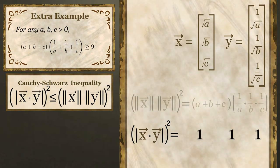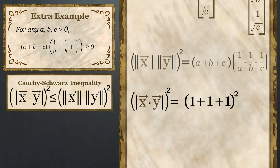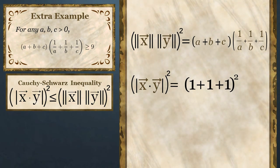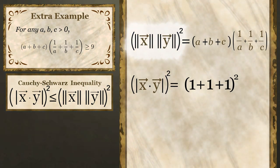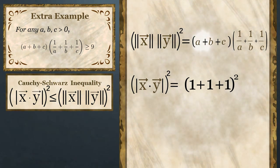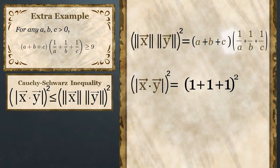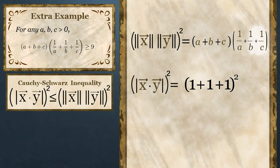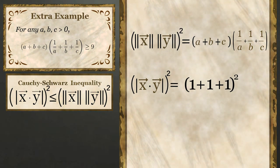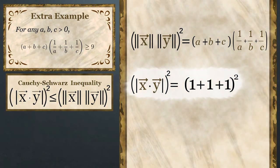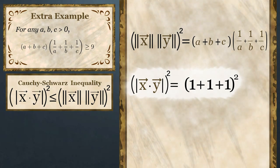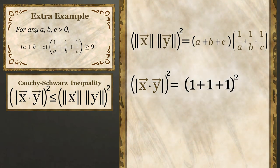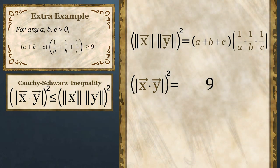By construction we already know the square of the product of the norms, norm of x times norm of y, is a plus b plus c times 1 over a plus 1 over b plus 1 over c. And as we can check, the square of the dot product is 1 plus 1 plus 1 squared, or 9.